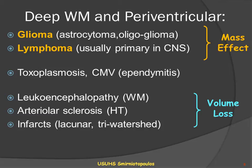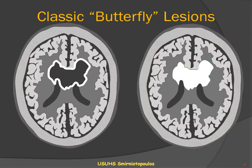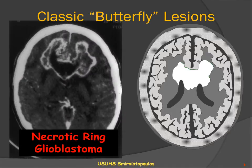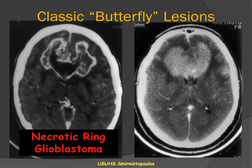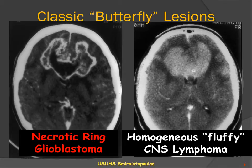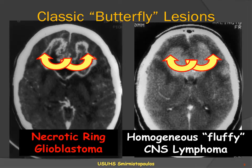However, these lesions classically are associated with volume loss. Of course, these small vessels affected by hypertension may produce hemorrhage in a similar location. The classic butterfly lesions include the necrotic ring-enhancing lesion of a glioblastoma multiforme, the highest grade of diffuse astrocytoma, as well as the fluffy hyperattenuating, relatively homogeneous lesion for primary CNS lymphoma. Both of these lesions microscopically infiltrate and follow along the white matter tracks as they pass from side to side through the corpus callosum.